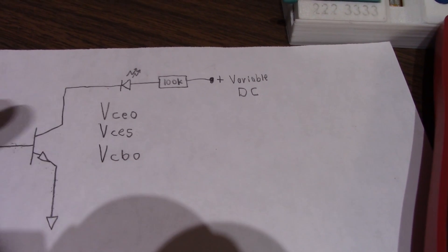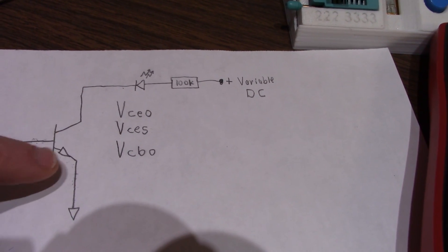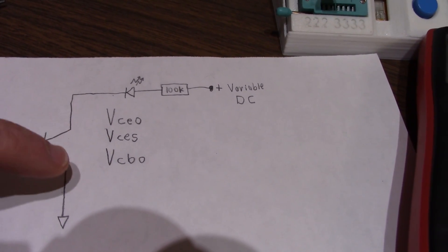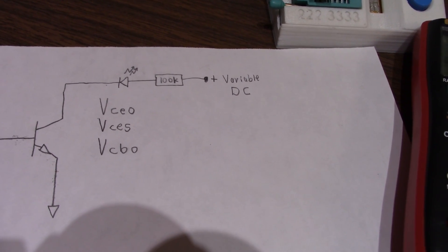Now, of course, under this condition, VCEO, without any current limiting, this transistor can conduct heavily. And with a large voltage plus a large current, that's going to instantly damage the transistor.